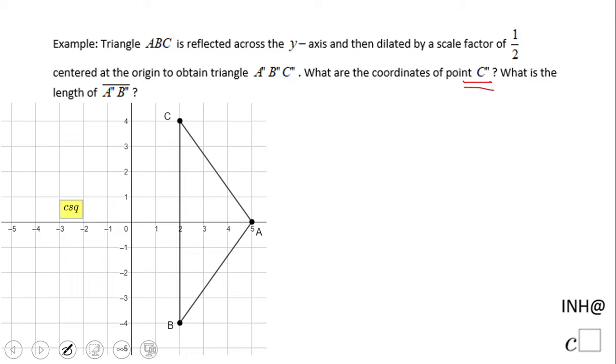C second is one of the coordinates of triangle A''B''C'', which is the result of reflecting triangle ABC over the y-axis and dilating by a scale factor of one half.